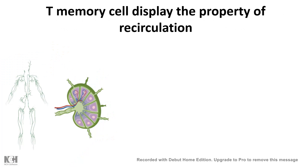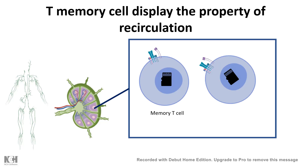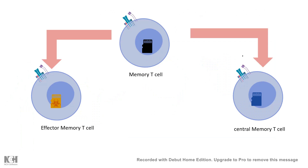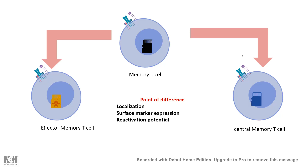Memory T cells also display a property called recirculation — they not only reside in secondary lymphoid organs like lymph nodes, but can quickly redistribute to tertiary lymphoid organs or to the site of infection they previously encountered. This recirculation property makes them different from naive T cells. Within the memory T cell population there are further subtypes, such as effector memory T cells and central memory T cells. One key point of difference lies in their localization — effector memory T cells are localized to the site of infection previously encountered.